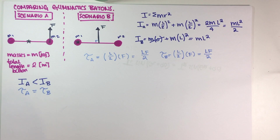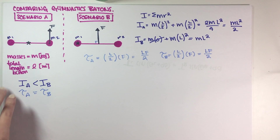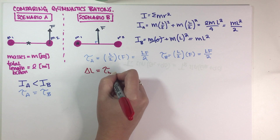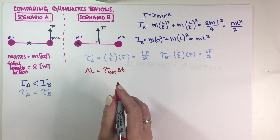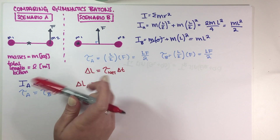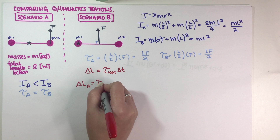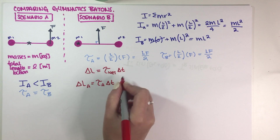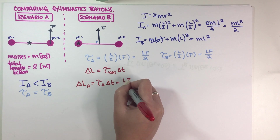For the third part we have to compare change in angular momentum. Change in angular momentum, or angular impulse, equals net torque times delta T. For scenario A, delta L_A equals the net torque — since we only have one force there's only one torque — times delta T, which we can write as LF/2 times delta T.